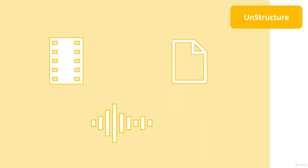Unstructured data simply doesn't have any structure at all. Examples include audio, video, or binary files such as PDF, Word, or Excel books.